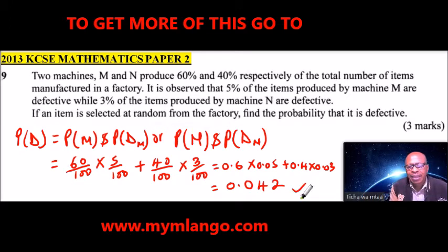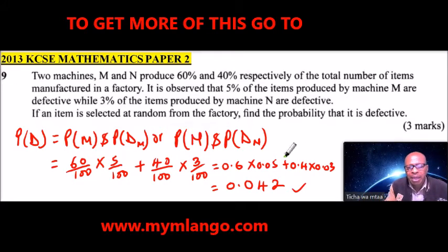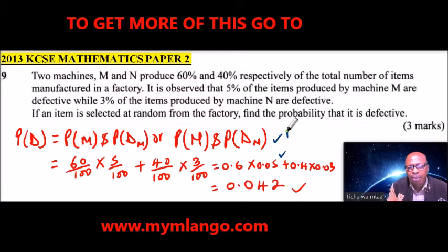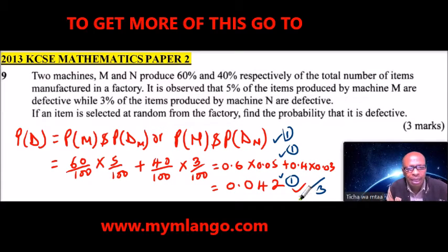This equals 0.042. Once you get that, you will be able to get 3 marks: 1 mark for identifying the setup, 1 mark for writing the fraction correctly, and 1 mark for the answer. That is how you work out that question.